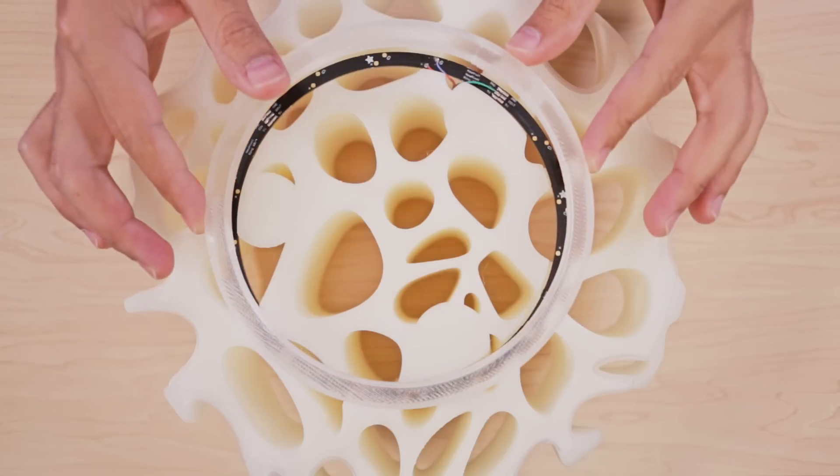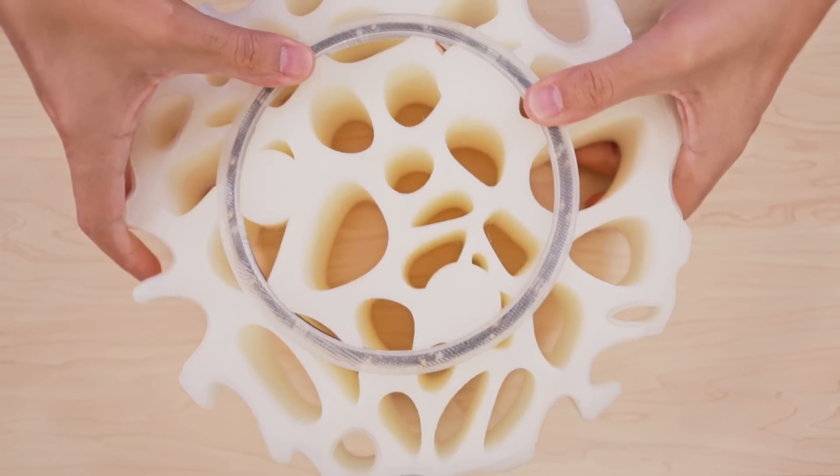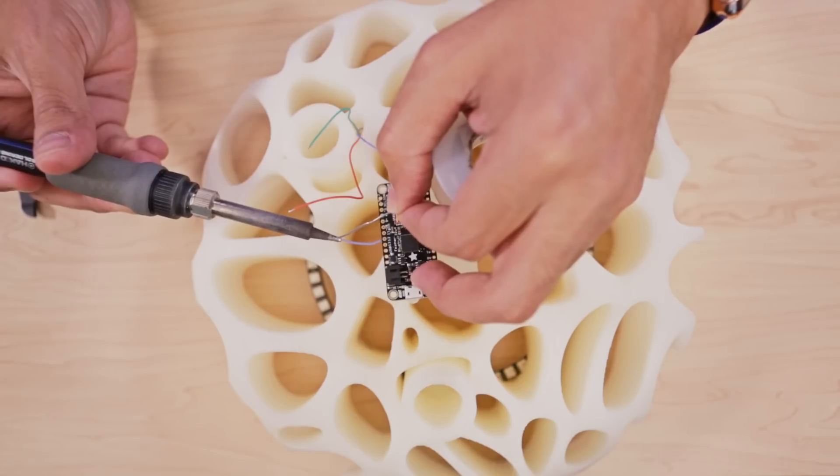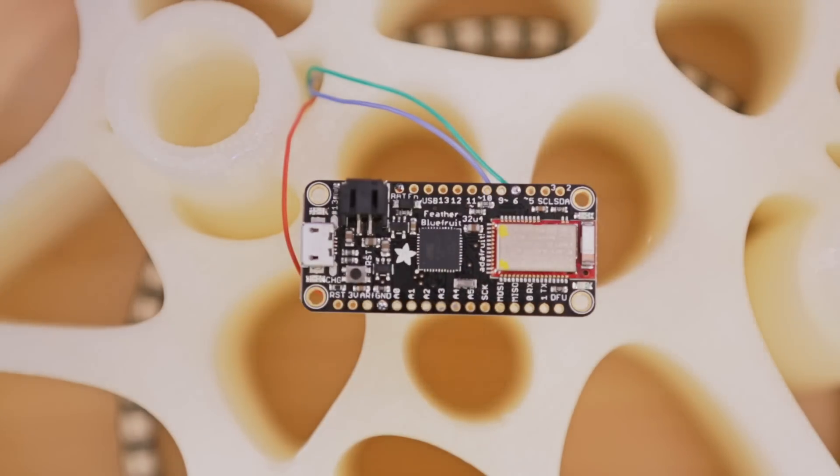A 3D printed cover will protect the NeoPixel PCBs from any moisture or potential forces. To connect the wires to the board we'll strip away some insulation and tin them with a bit of solder. The data in wire from the NeoPixel ring will connect to pin number 6 on the Adafruit Feather.